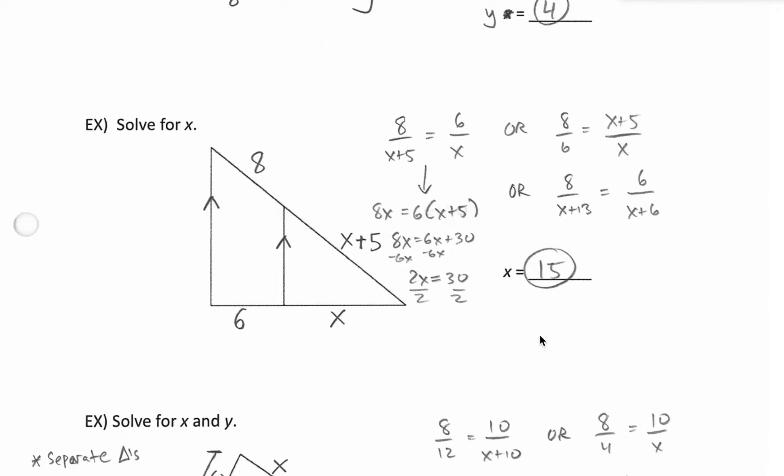All right, next example. Getting a little trickier here. Still compare corresponding parts. So for example, we could compare the left sides top to bottom, 8 to 6. That's equal to the right sides top to bottom, x plus 5 to x. So we could do that. We could just compare the tops left to right, 8 to x plus 5, and keep that going on the bottom left to right, 6 to x.